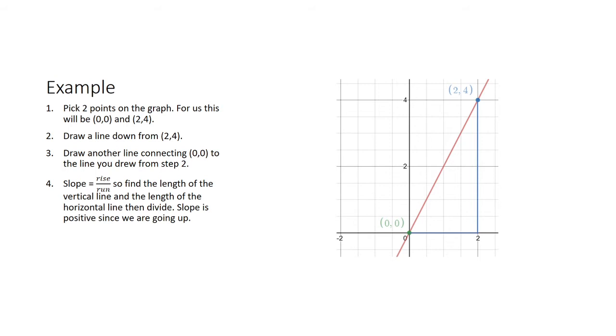Slope is defined to be the rise over the run, so we need to find the length of the vertical line and the length of the horizontal line and then divide. In this case, the slope is positive since from left to right we're increasing. In other words, we're going up.